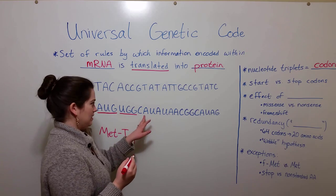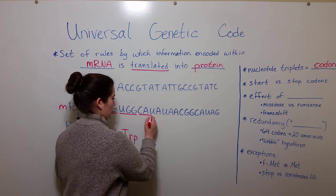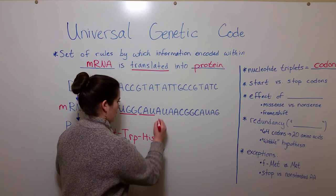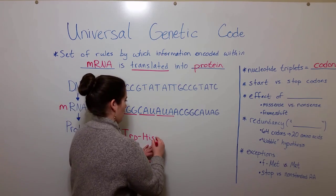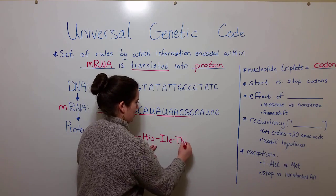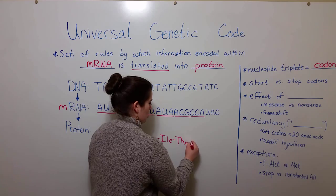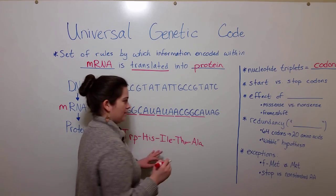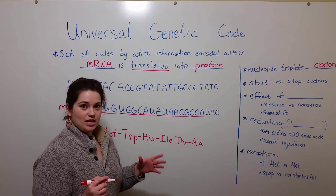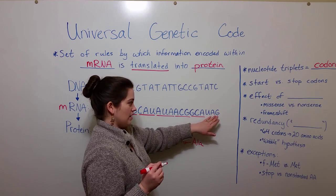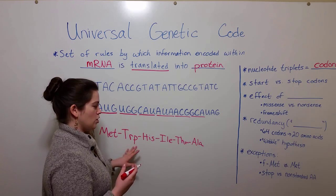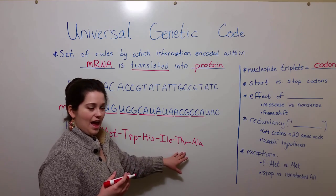CAU is the third codon and codes for histidine. AUA codes for isoleucine. ACG codes for threonine. GCA codes for alanine. Finally, we get to UAG. UAG is special because it is a stop codon — it tells the translation process to terminate so that no more amino acids are added.